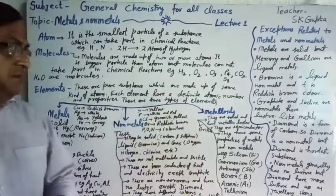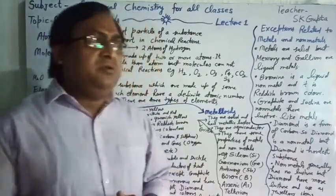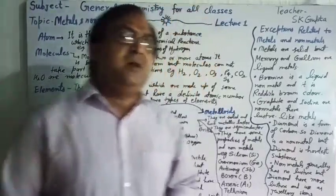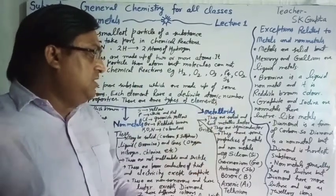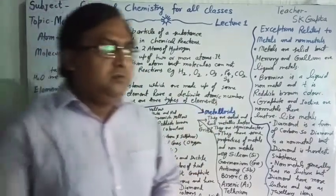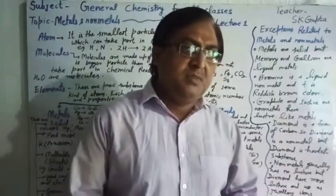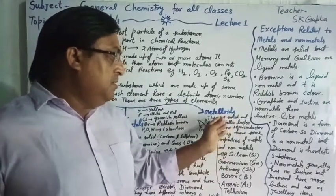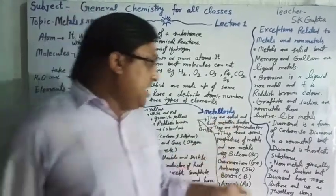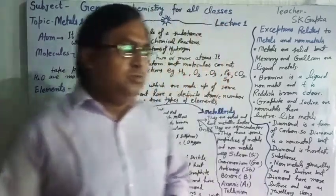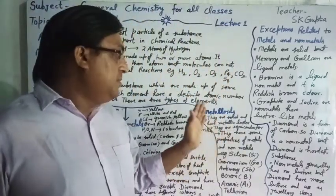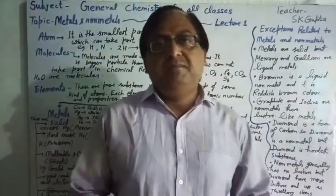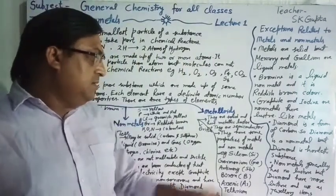A metalloid is a substance or element which has properties of both metals and non-metals. Metalloids are solid and they have metallic luster, but they are brittle. They are semiconductors, having some properties of metals as well as non-metals. So we can say a metalloid is an element which has properties of both metal and non-metal.